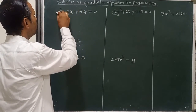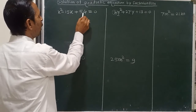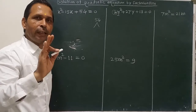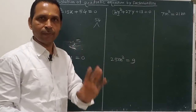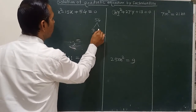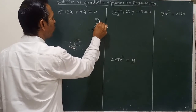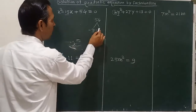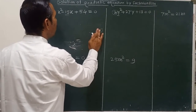Multiply the constant term with the coefficient of the square term. In this example, the coefficient is 1 and that is why the multiplication gives 54. We need to split 54 in such a way that the product is 54 and the sum is minus 15. If we take minus 9 and minus 6, the product is 54 and the sum is minus 15. These are the factors: minus 9 and minus 6. Now split the middle term.